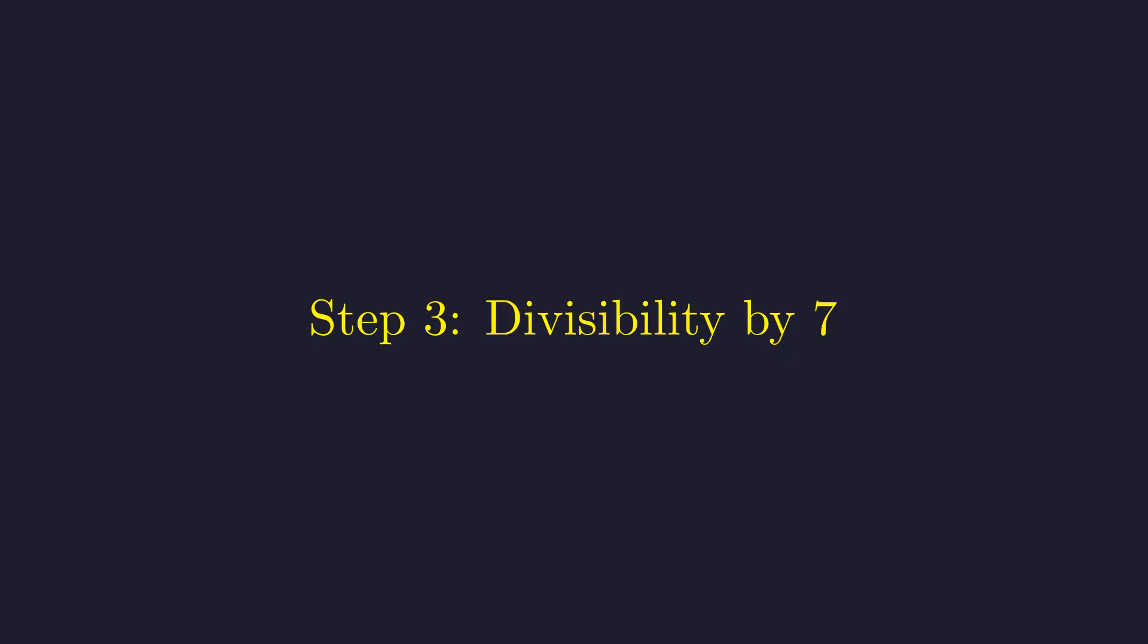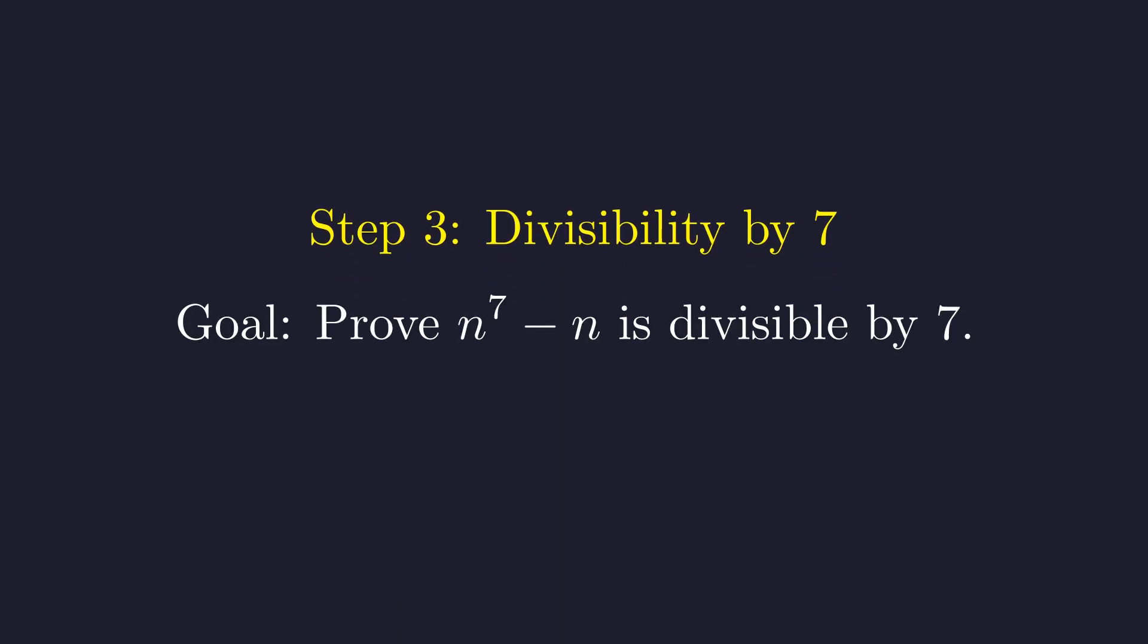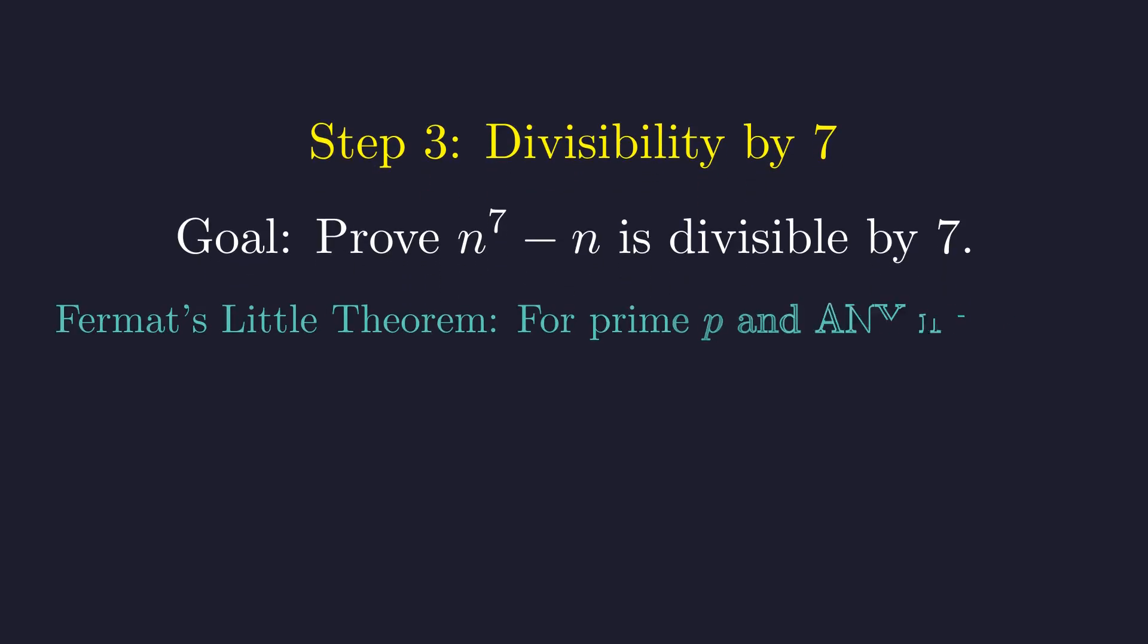Now for the final piece, divisibility by 7. For this one, I want to step back to our original expression because there's an elegant theorem that applies directly. We need to show that n^7 - n is always a multiple of 7. Enter Fermat's Little Theorem, one of the gems of number theory.